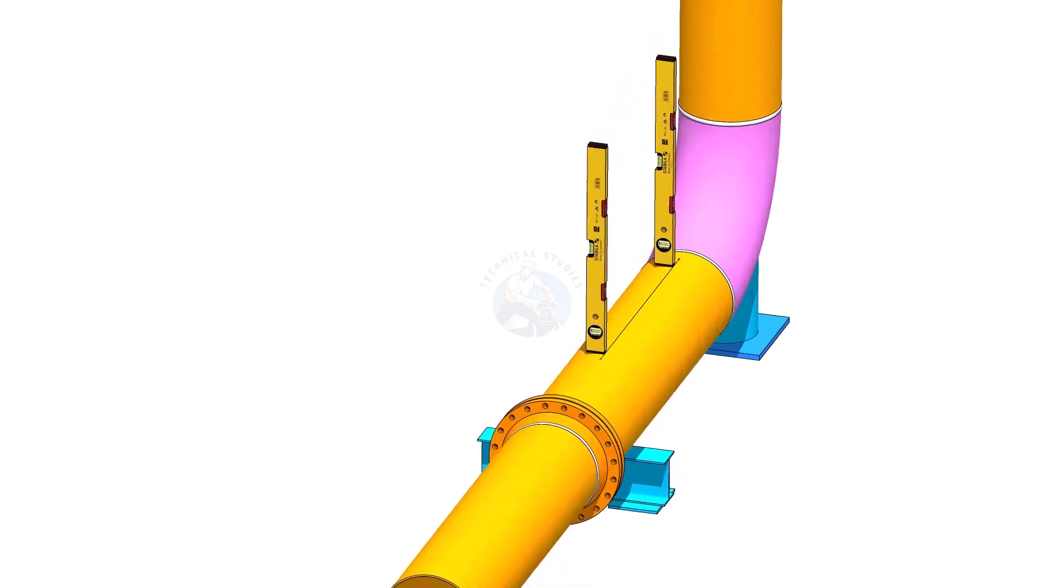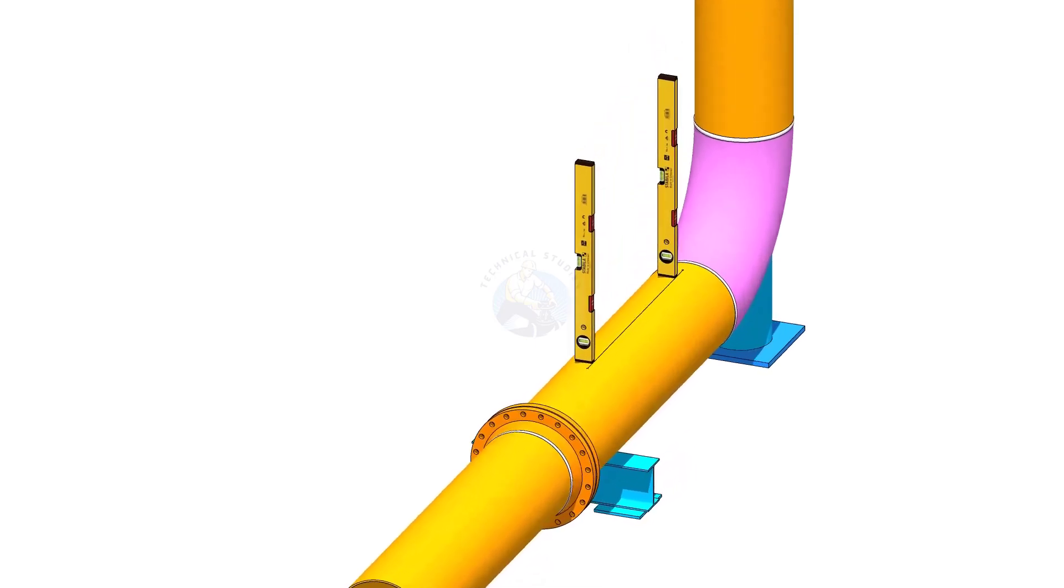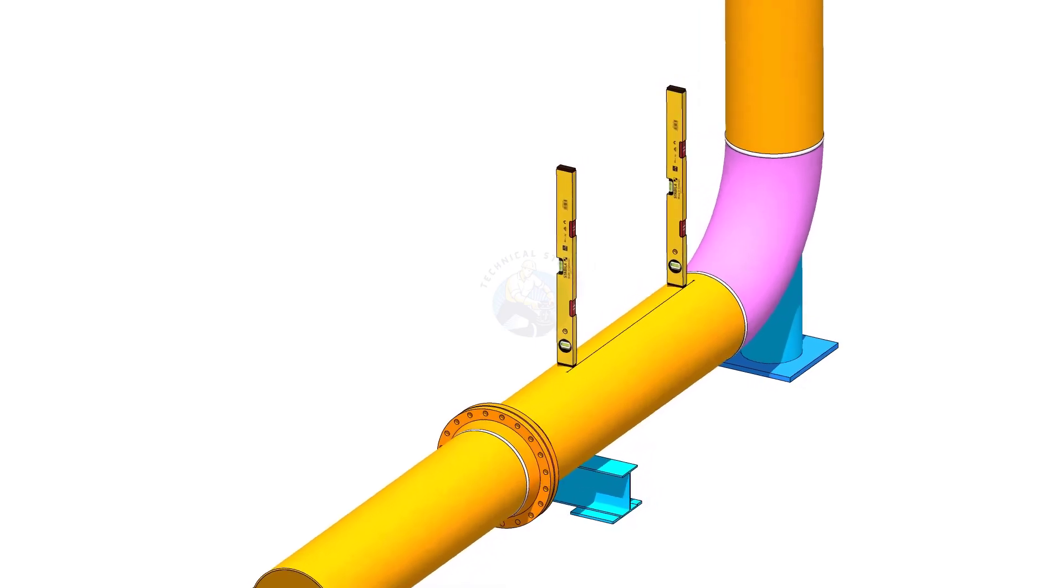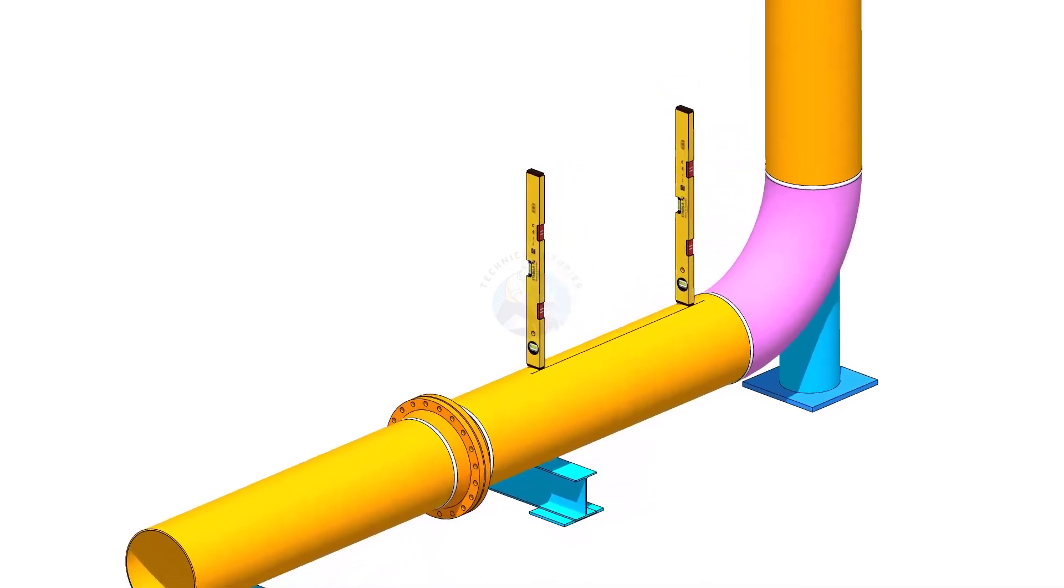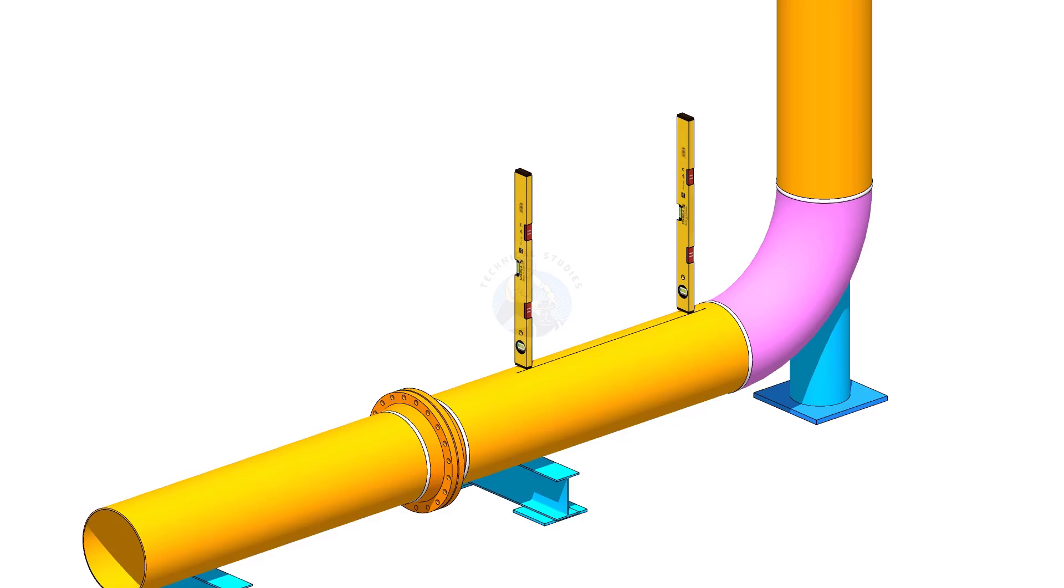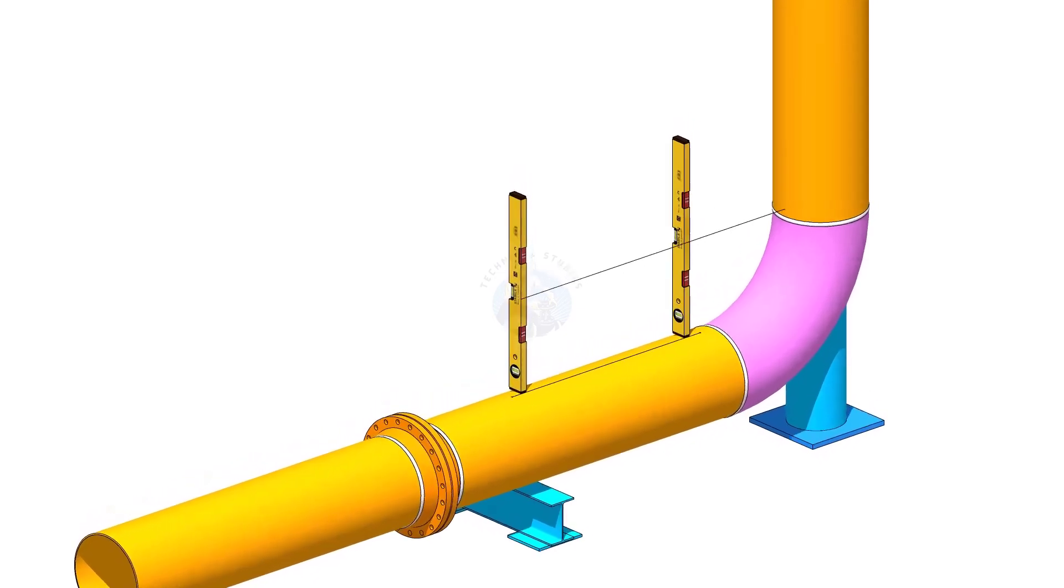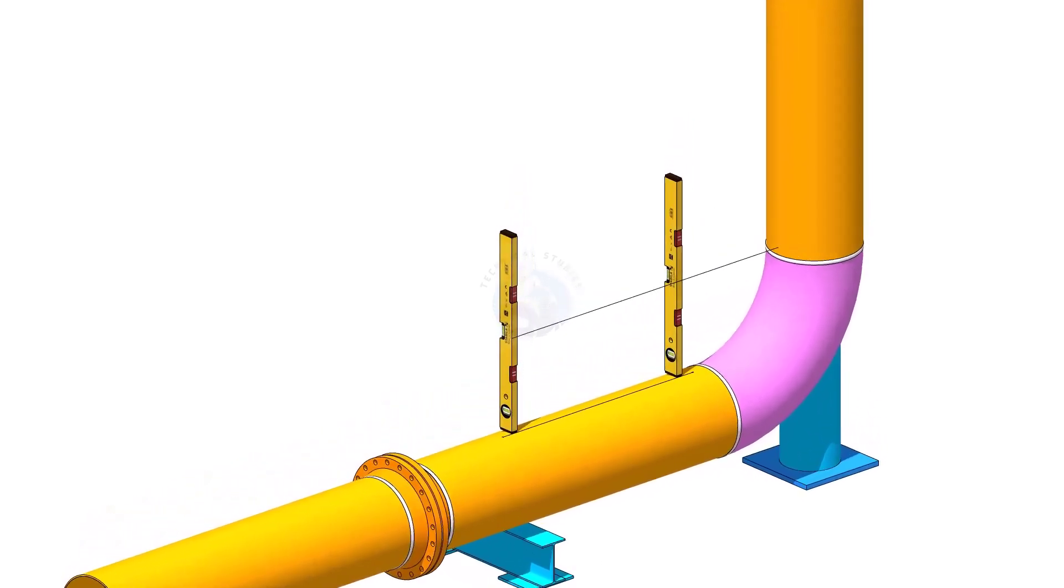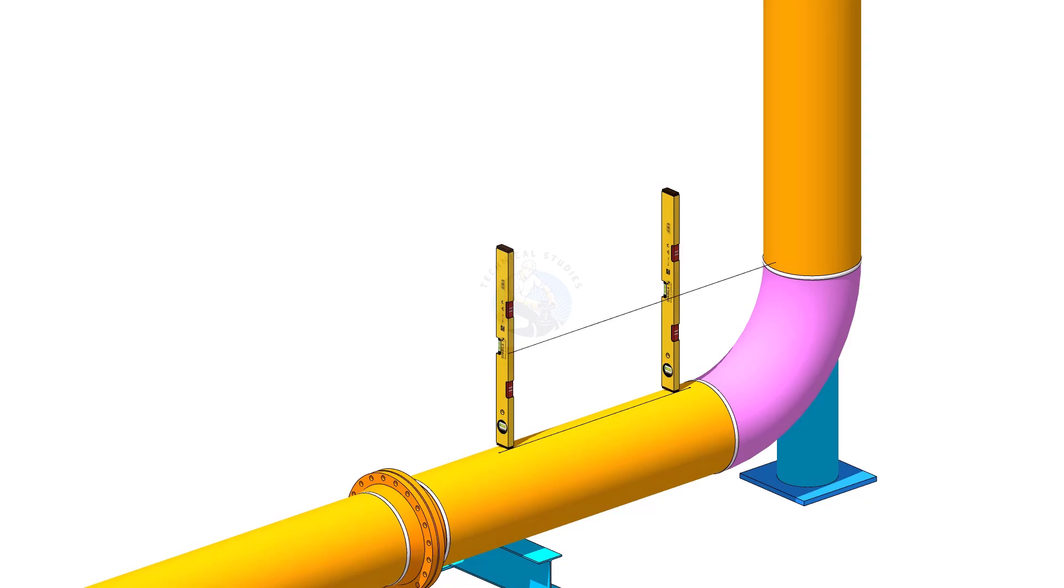Hold two level bottles on the line vertically, as shown. Transfer the levelness on the vertical pipe on two locations, as shown. You can use line thread or a straight edge.